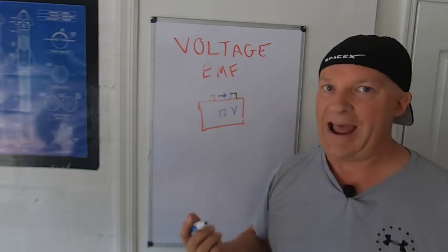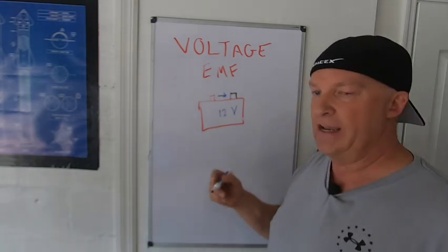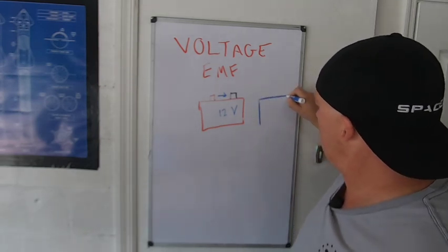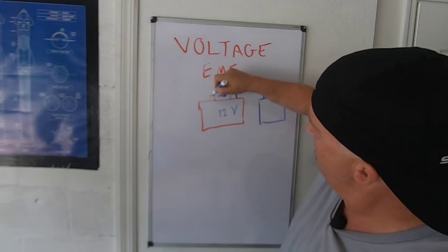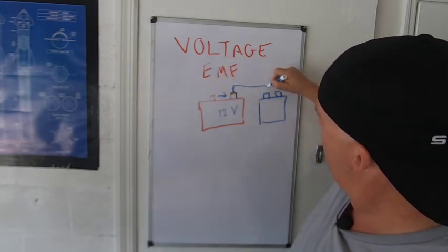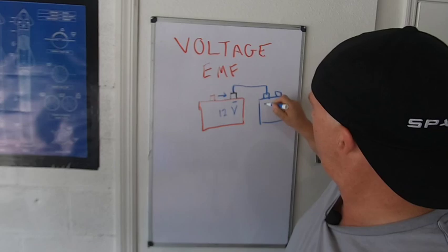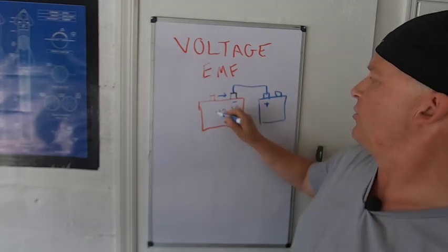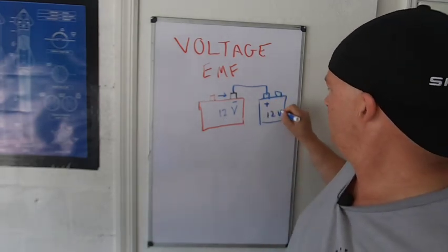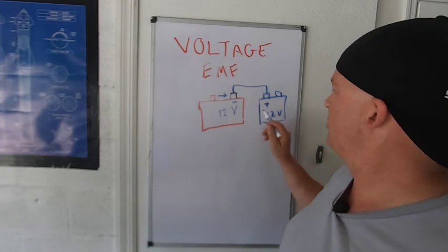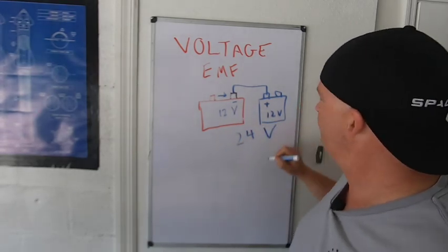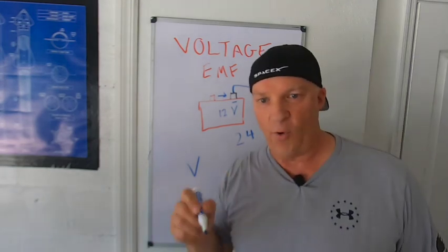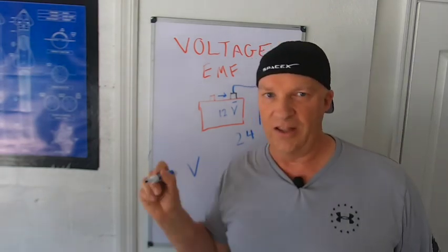And voltage adds in series. So if you take a bunch of batteries and you put wire between these batteries from the negative to the positive terminal, you get to add the voltages. So now, instead of one push, it's two pushes, and that equals 24 volts. But it's an electromotive force, and that's all it is.